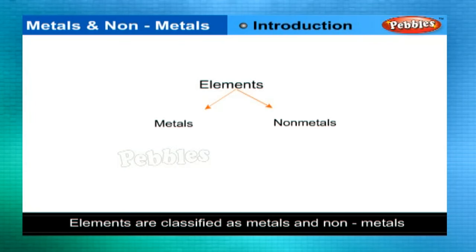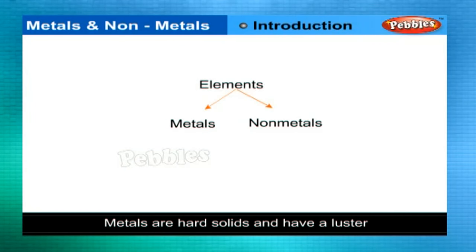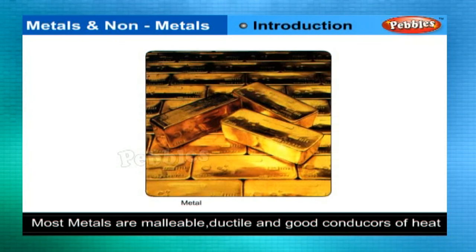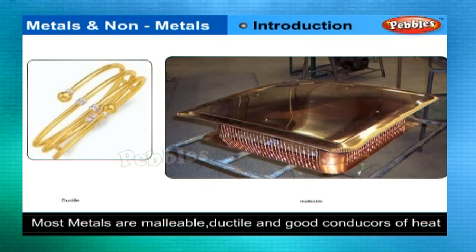Elements are classified as metals and non-metals. Metals are generally hard solids and have a luster. Most of the metals are malleable, ductile, and some of them are good conductors of heat.